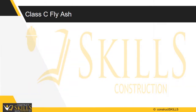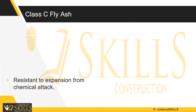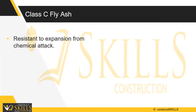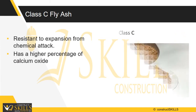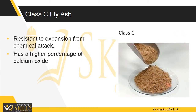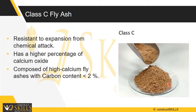Class C fly ash is resistant to expansion from chemical attack. It has a higher percentage of calcium oxide than Class F and is more commonly used for structural concrete. Class C fly ash is typically composed of high calcium fly ashes with a carbon content of less than 2 percent.